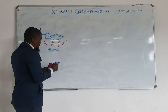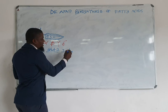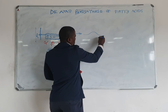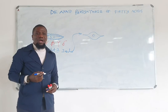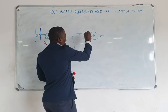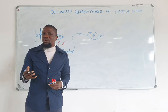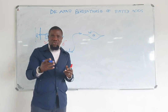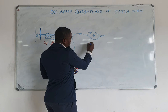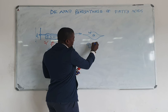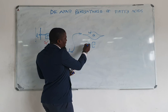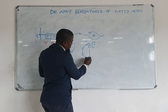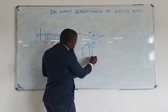Once insulin has been secreted, it moves to peripheral tissues. Take the muscle cell as an example — this is one of the tissues that will receive insulin. Insulin binds to its receptor. The insulin receptor has four subunits: two alpha subunits and two beta subunits.